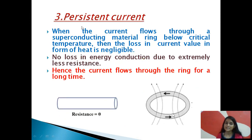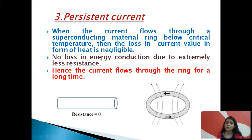Now let's see what is persistent current. The superconducting material is in the form of a ring. When the current flows through it below the critical temperature, the loss in current in the form of heat is negligible. Due to extremely low resistance, there is no loss in energy. Hence, the current flows through the ring for a long time.